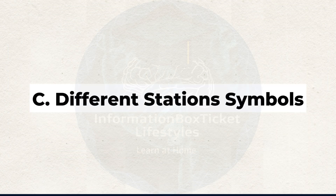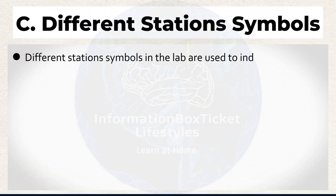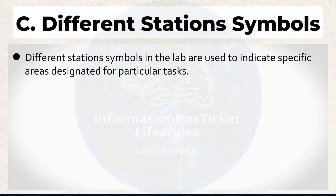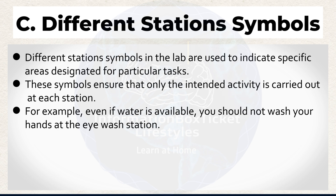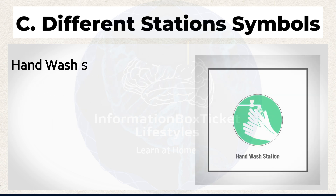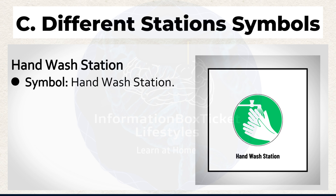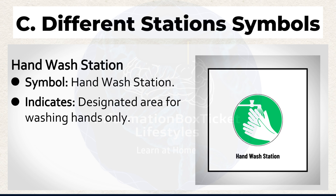C. Different station symbols in the lab are used to indicate specific areas designated for particular tasks. These symbols ensure that only the intended activity is carried out at each station. For example, even if water is available, you should not wash your hands at the eyewash station. Hand Wash Station symbol indicates the designated area for washing hands only.